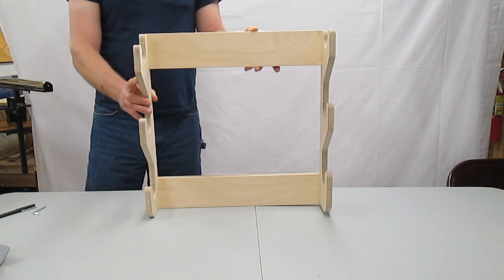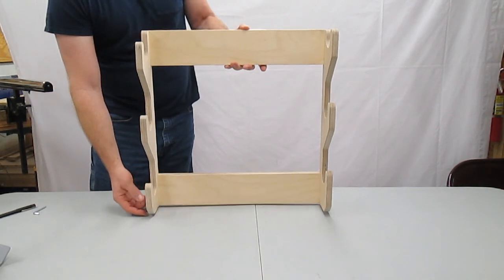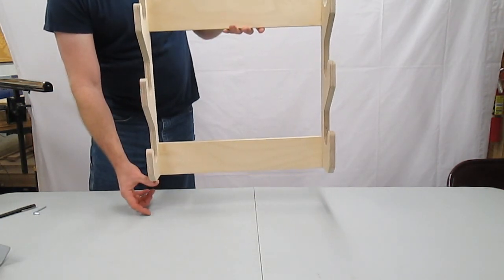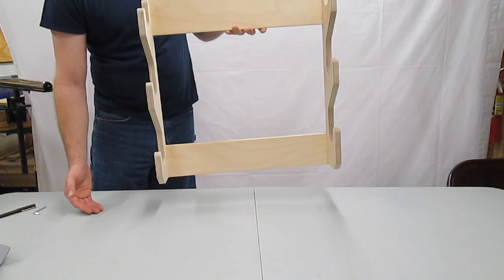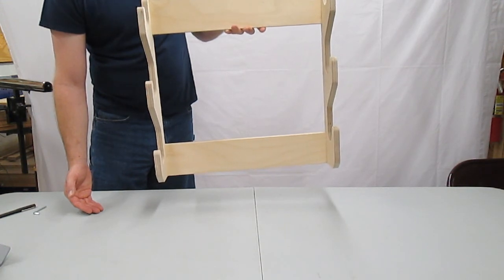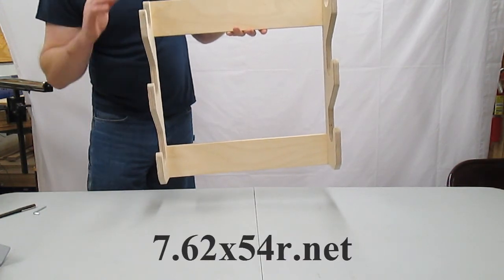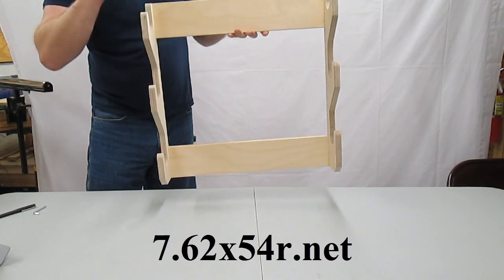When choosing a rack and its location, keep in mind that there needs to be some space typically about three inches below the rack as the toe of the stock in the bottom firearm will hang below the bottom of the rack. There also needs to be space above the rack to be able to remove the top firearm.